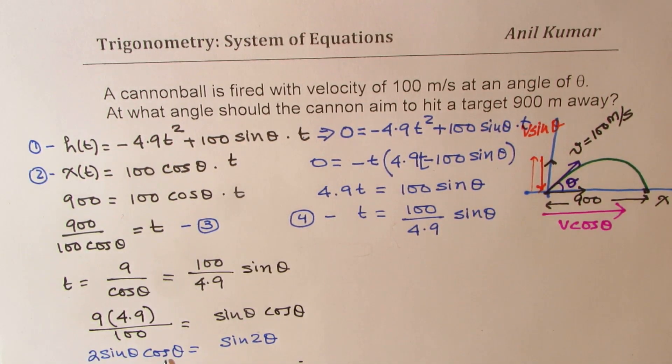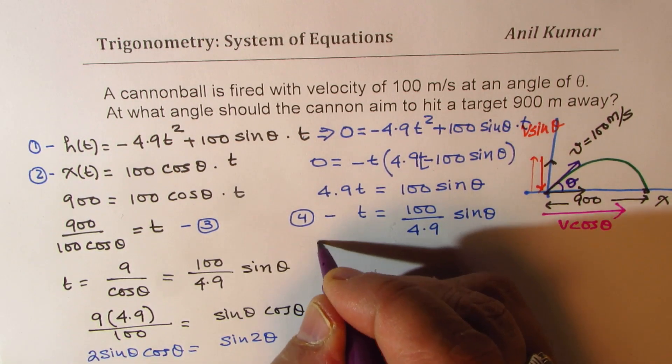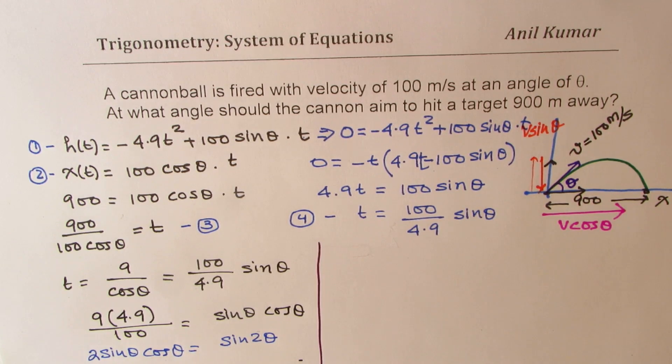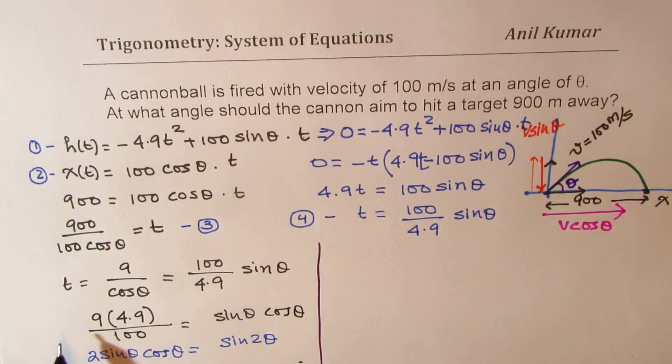So 2 sin theta cos theta is equal to sin 2 theta, right? So using this formula, what we can do here is we can multiply both sides by 2, right?